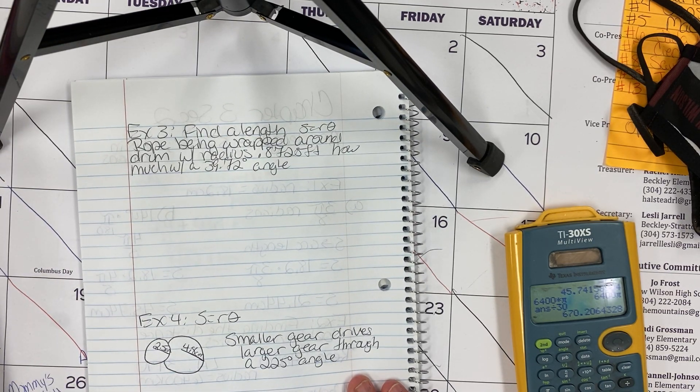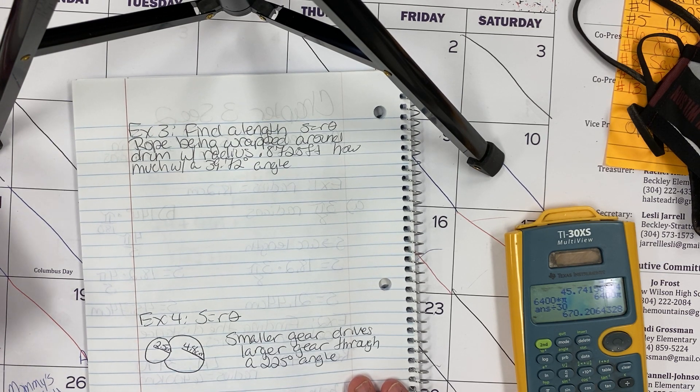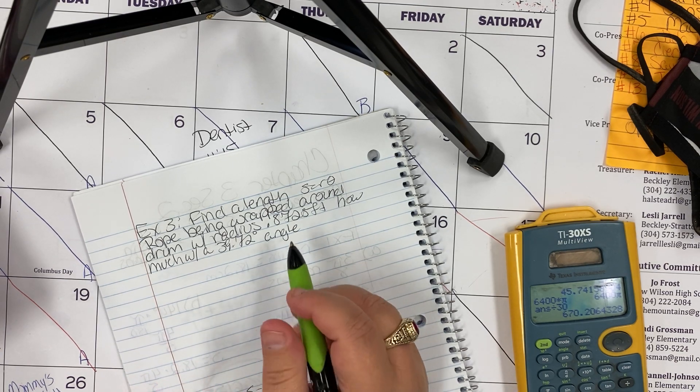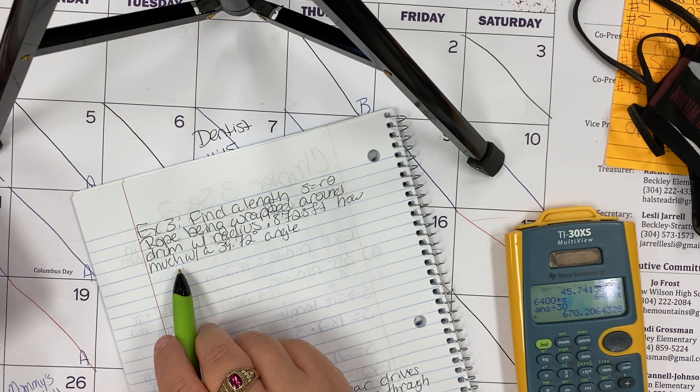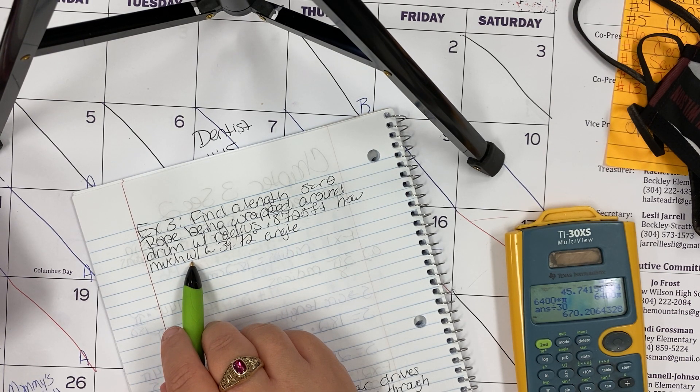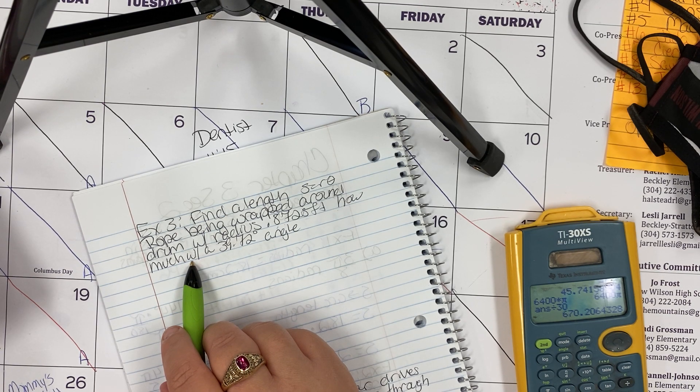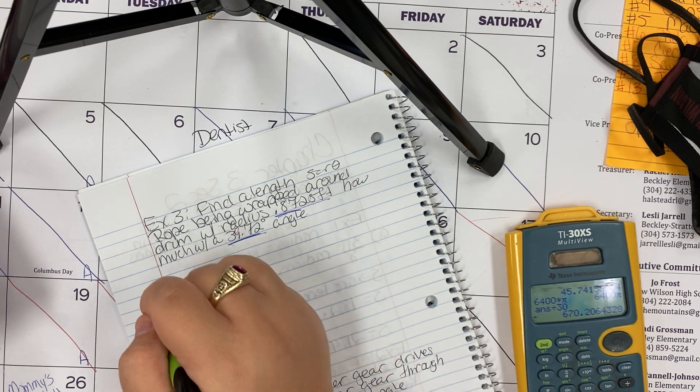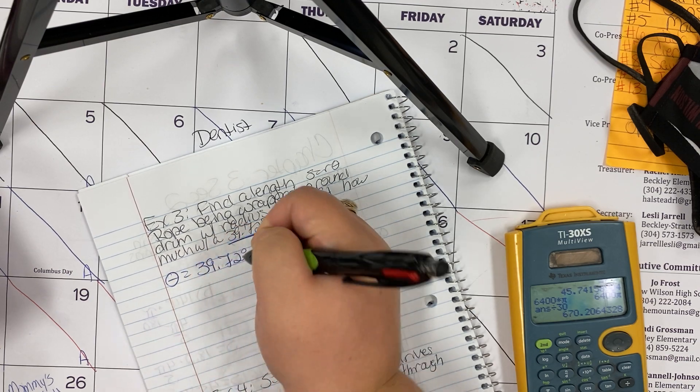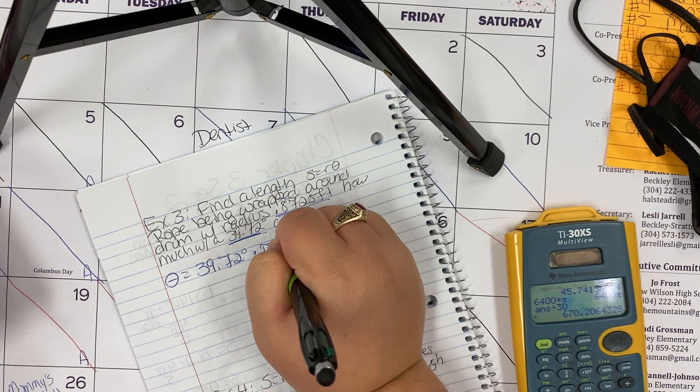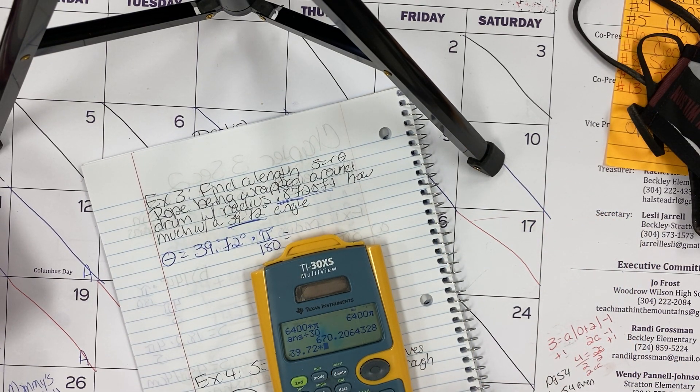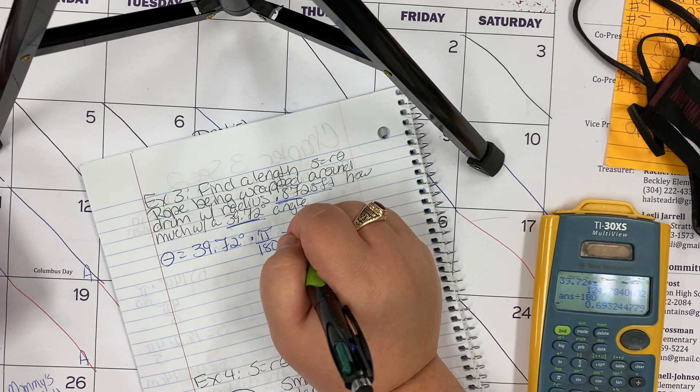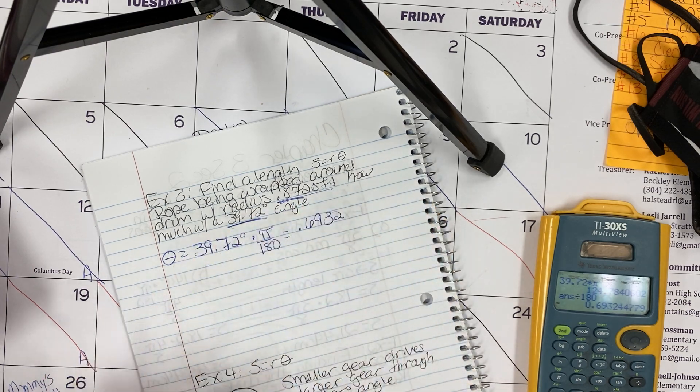Example three: we want to find a length using s equals r theta. We have a rope being wound around the drum with a radius of 0.8725 feet. How much rope will be wound around the drum if the drum is rotated through an angle of 39.72 degrees? We have our radius and we have our angle, so theta 39.72 degrees needs to be changed. We're going to multiply that by π over 180. So 39.72 times π and we're going to divide that by 180, and we get 0.6932. We'll go to four decimal places since our radius is in four decimal places.